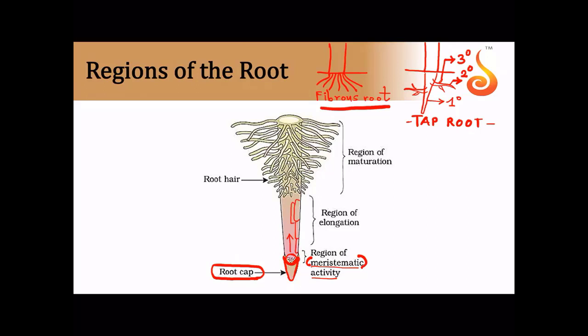Above the meristematic zone is a region where cells are rapidly elongating — this is the zone of elongation. The uppermost region is the zone of maturation, also called the zone of differentiation, where cells become parenchymatous or collenchymatous and the xylem and phloem get differentiated. This is also the zone of absorption, where unicellular cytoplasmic outgrowths called root hairs arise from the outermost layer called the epiblema.